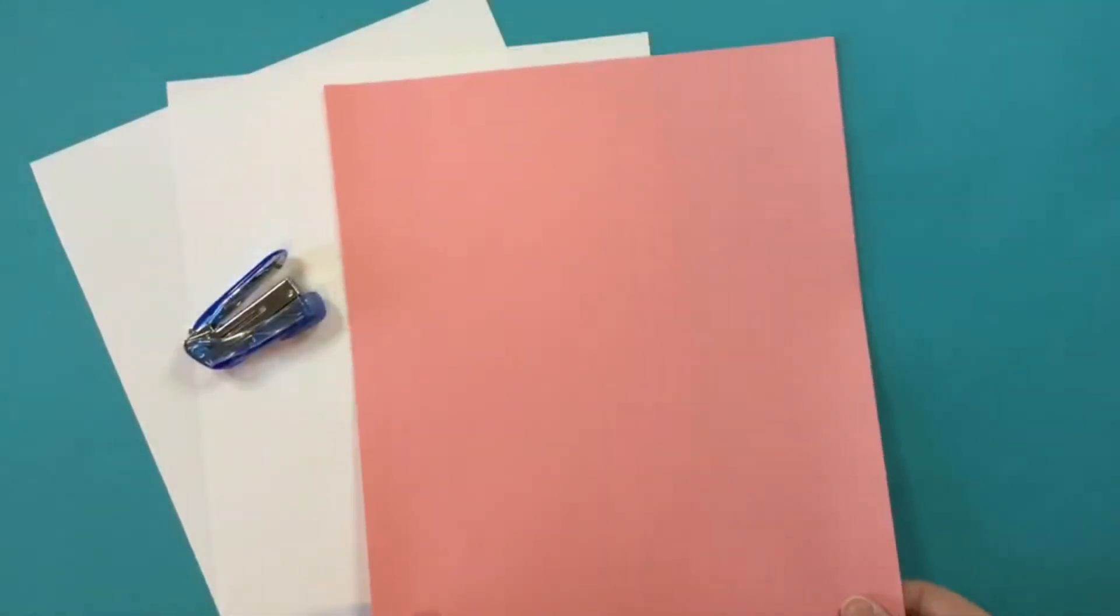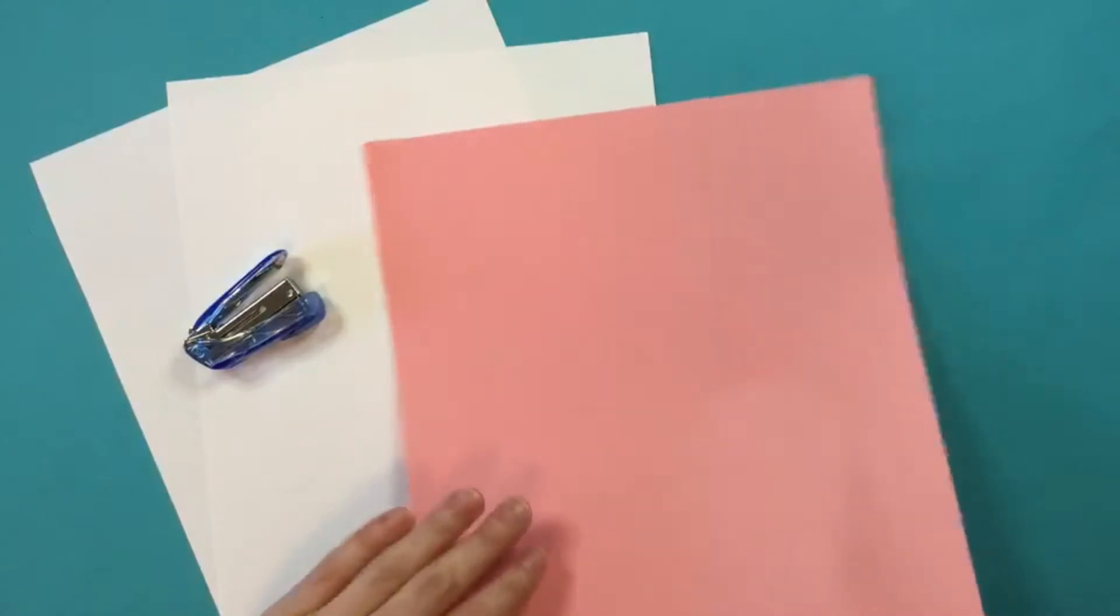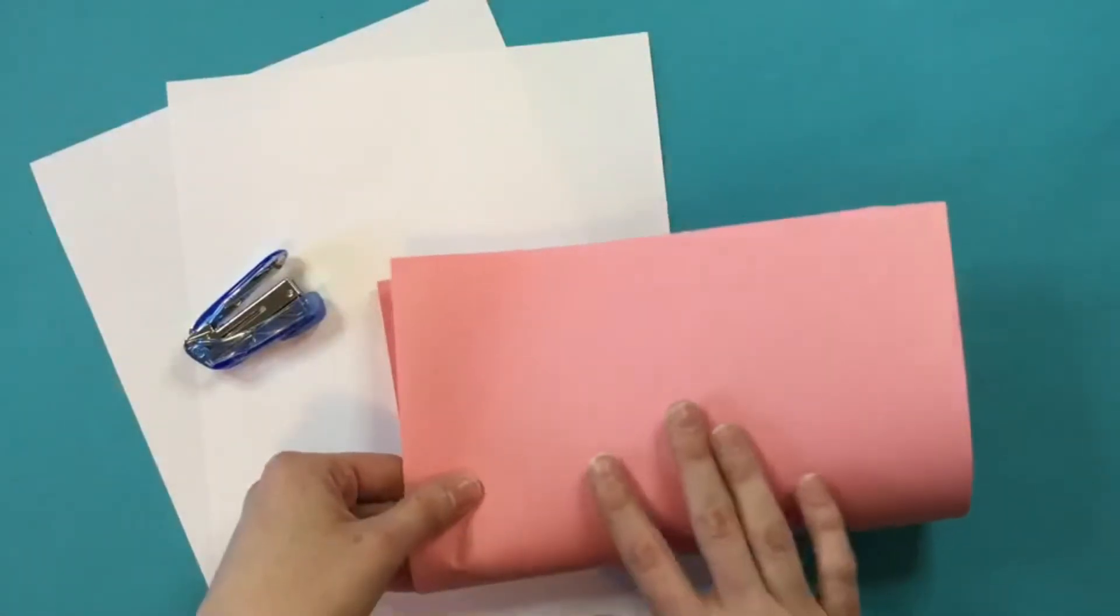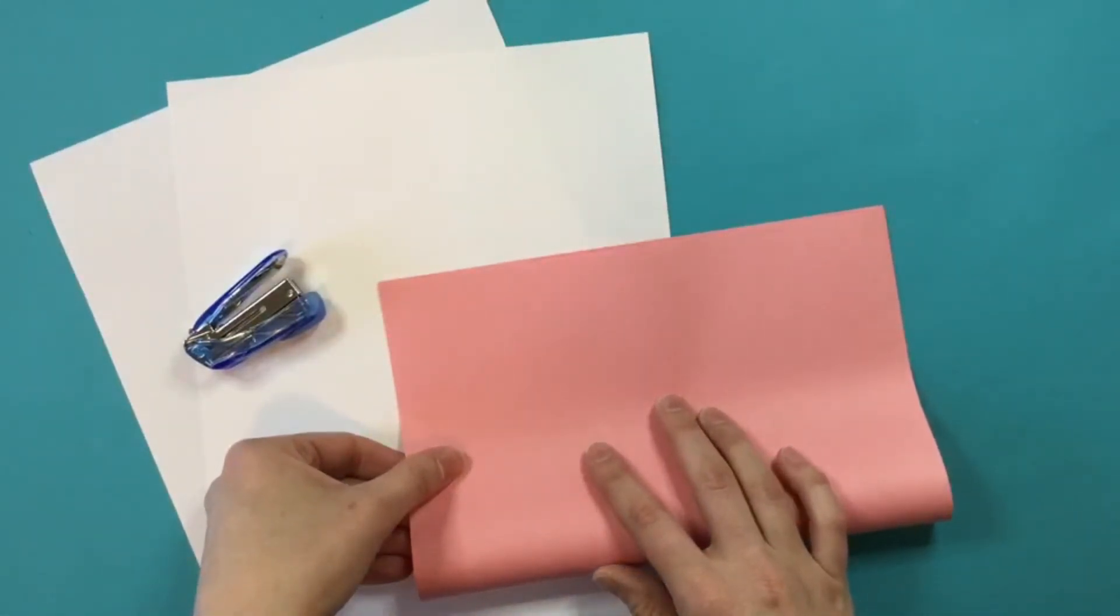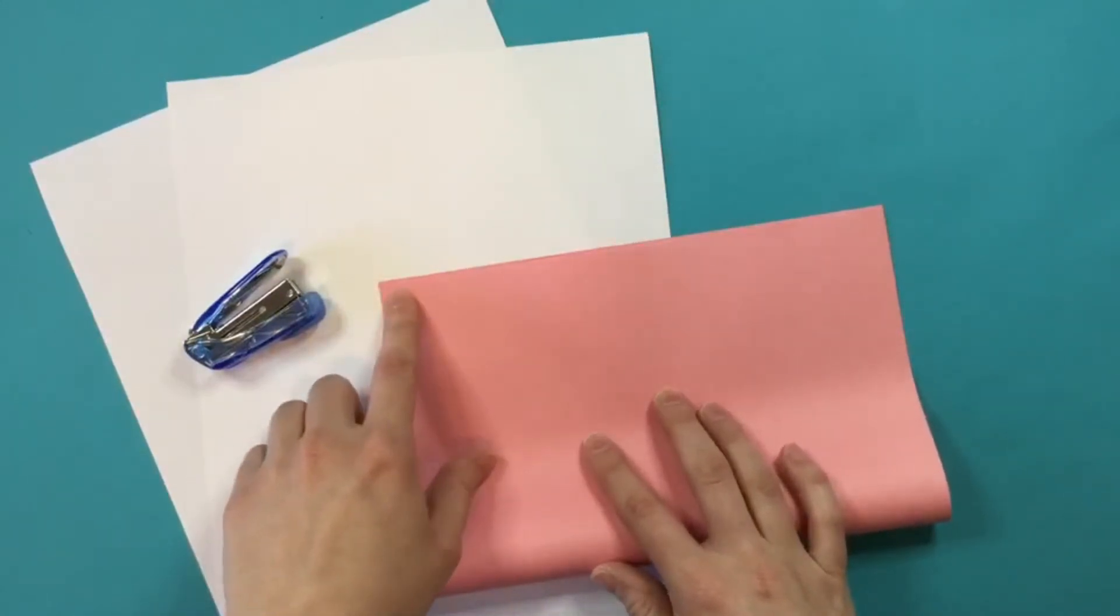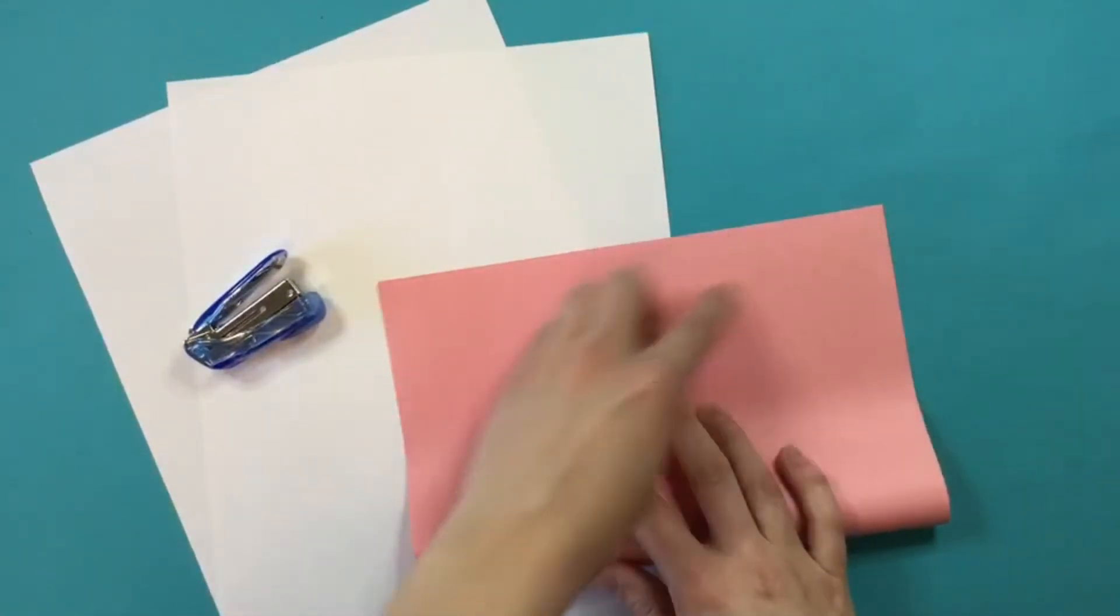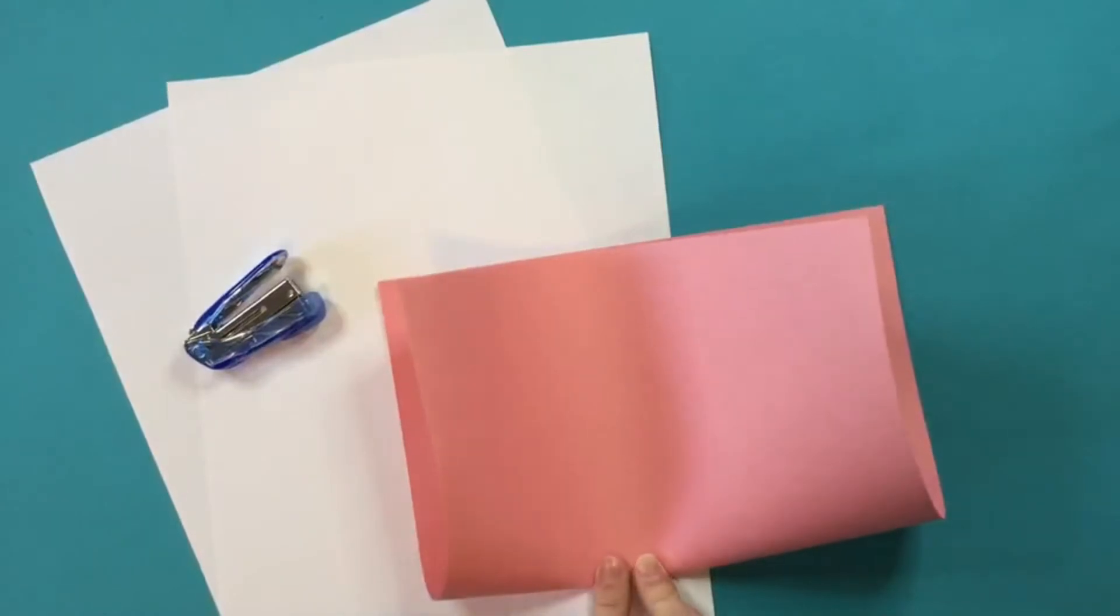When you've chosen your cover paper, you're going to go ahead and take that page and fold it in half. And it's important when you're folding to really line up those corners and edges before you go down and make your crease.